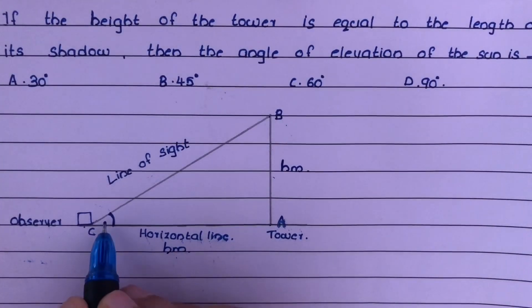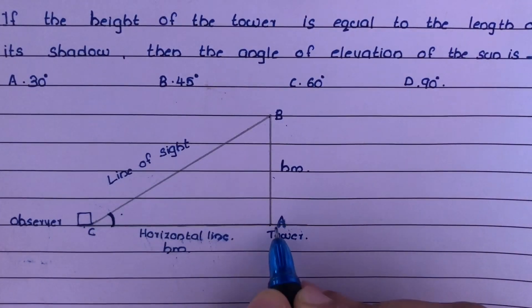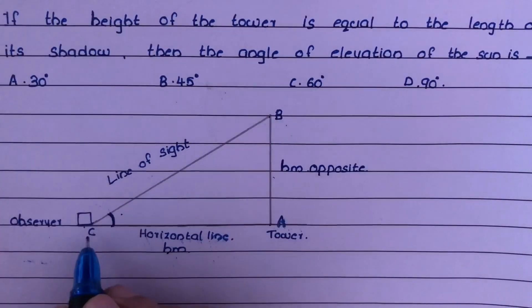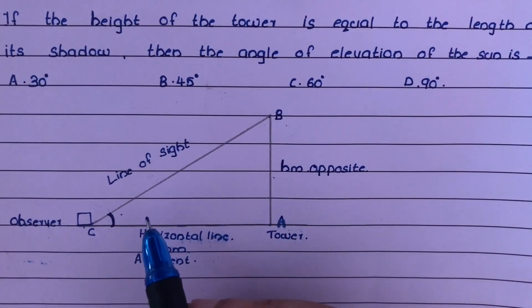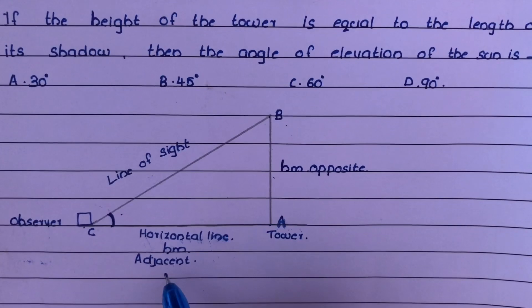Now, the question is to find the angle of elevation, which is angle C. With respect to angle C, side AB is opposite and AC is adjacent. Now consider a trigonometric ratio which explains the ratio between opposite side and adjacent side. That is tan and cot.